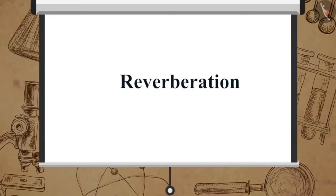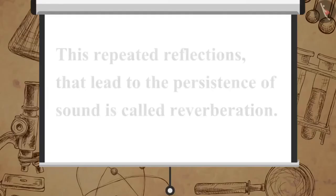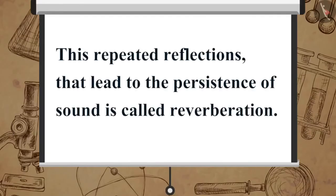Now let us learn about reverberation. When we create a sound in a big auditorium, it persists for some time due to repeated reflections from the walls until it is reduced to a value where it is no longer audible. This repeated reflection that leads to the persistence of sound is called reverberation.